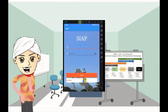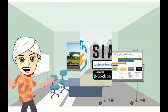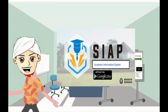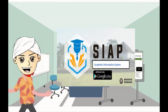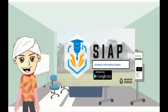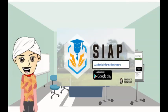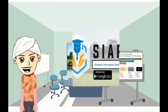Make sure you have downloaded the Asiop application via Play Store. Filling out the IRS via Android is very easy — you just need to choose the course offered, then save and view it. For details, please refer to the following steps.